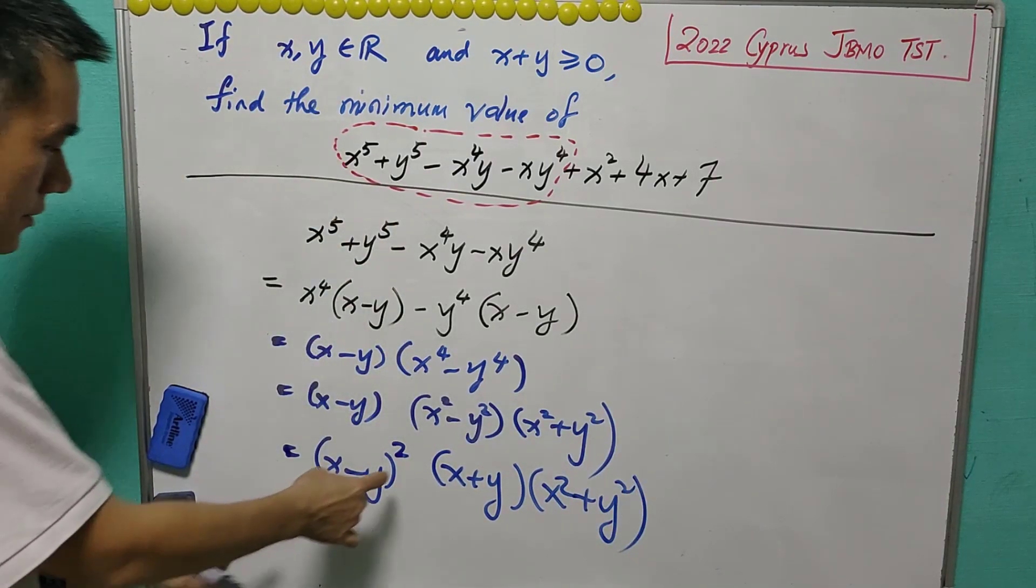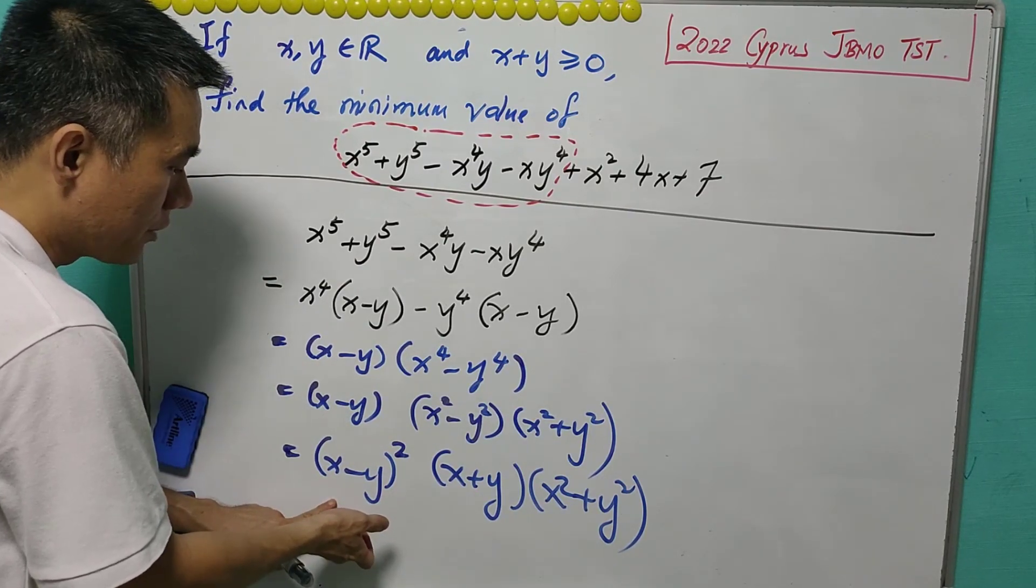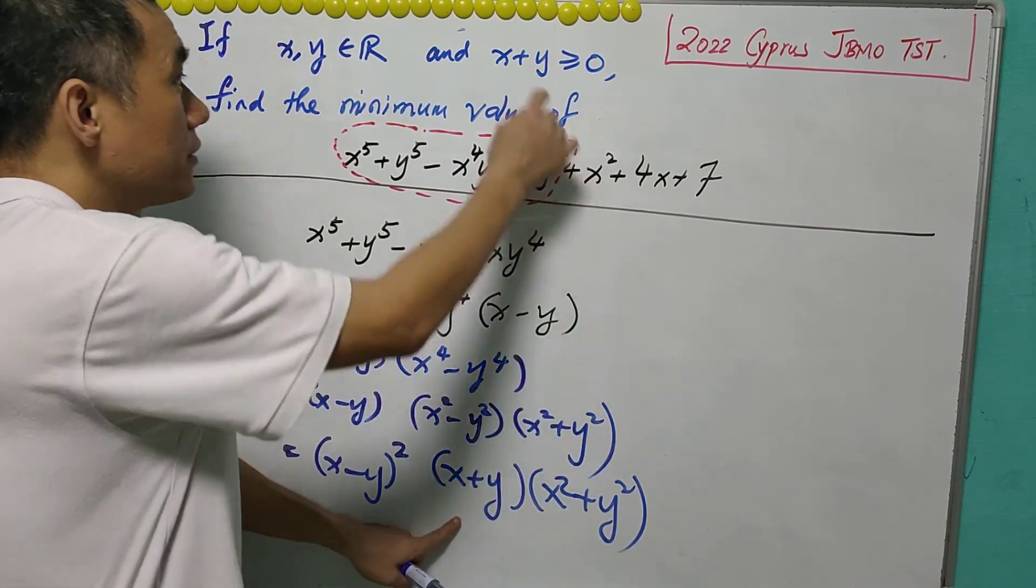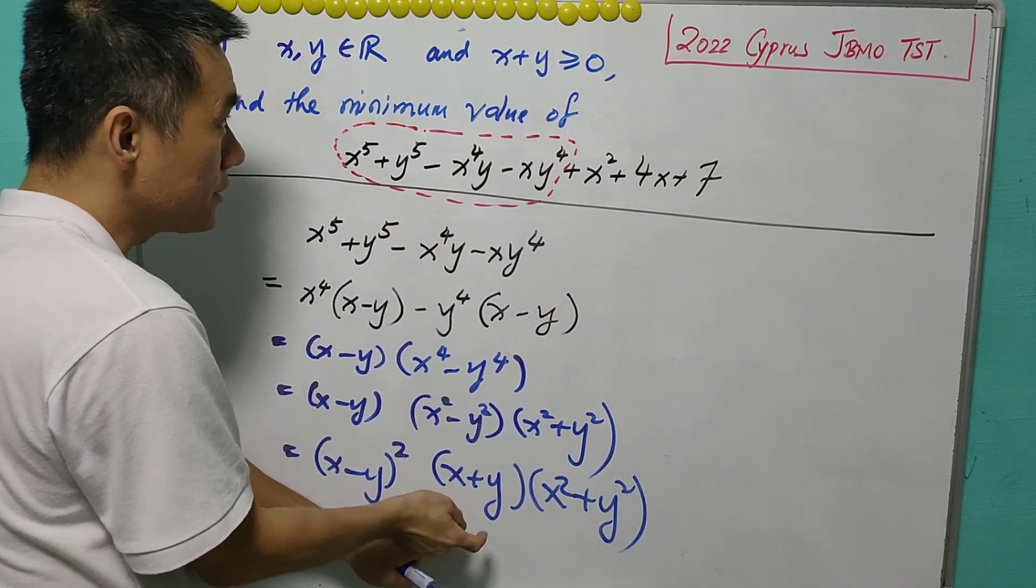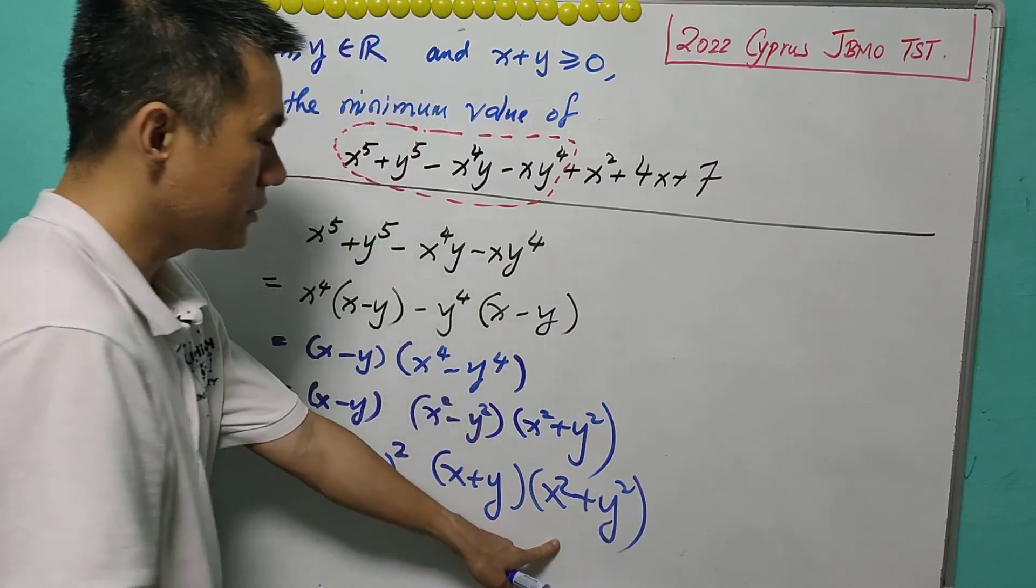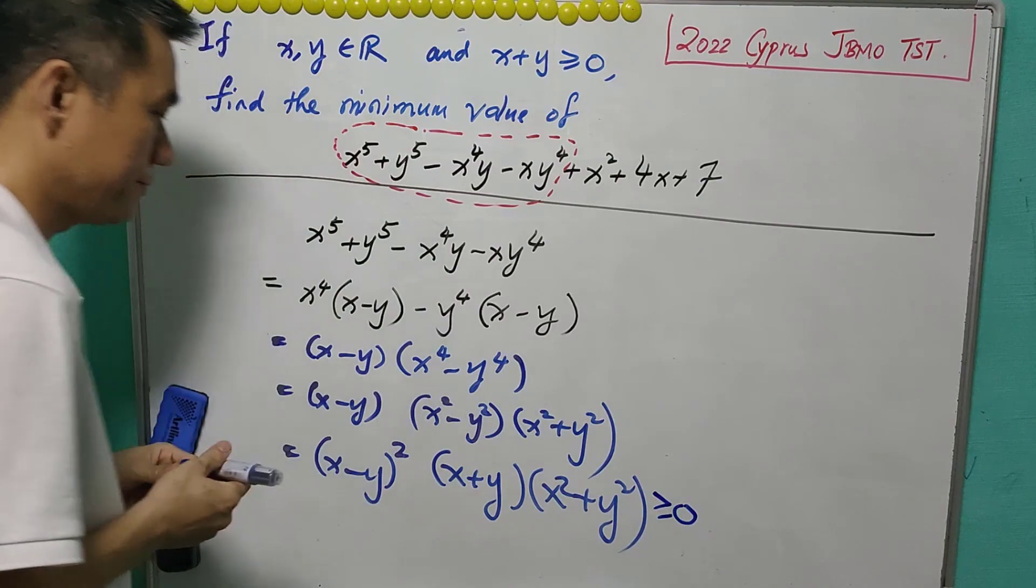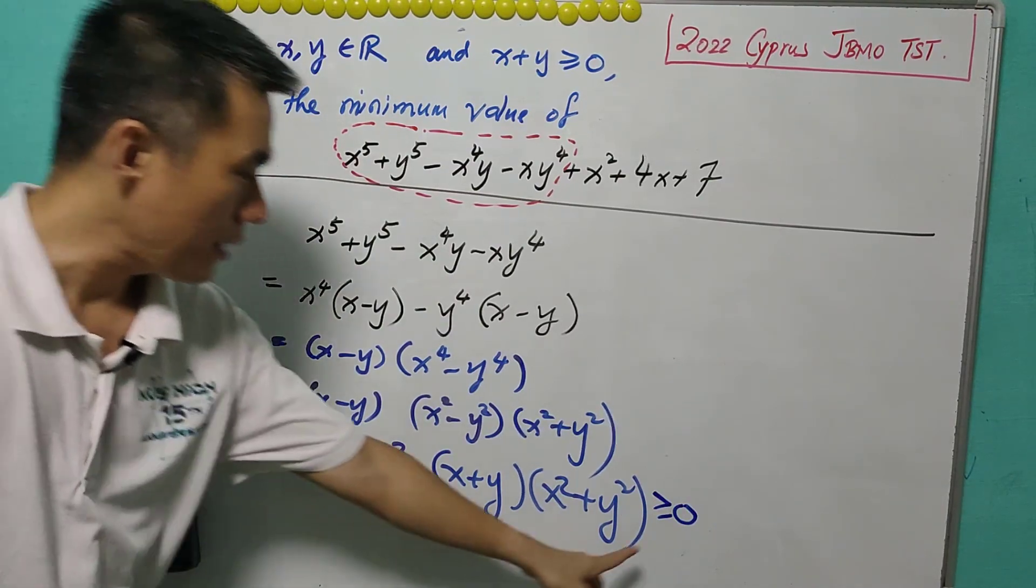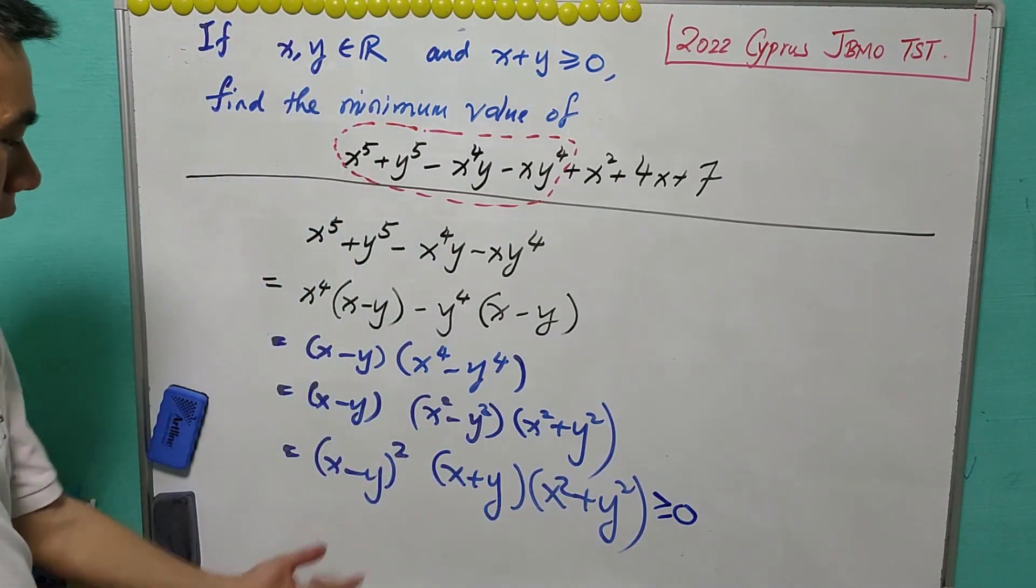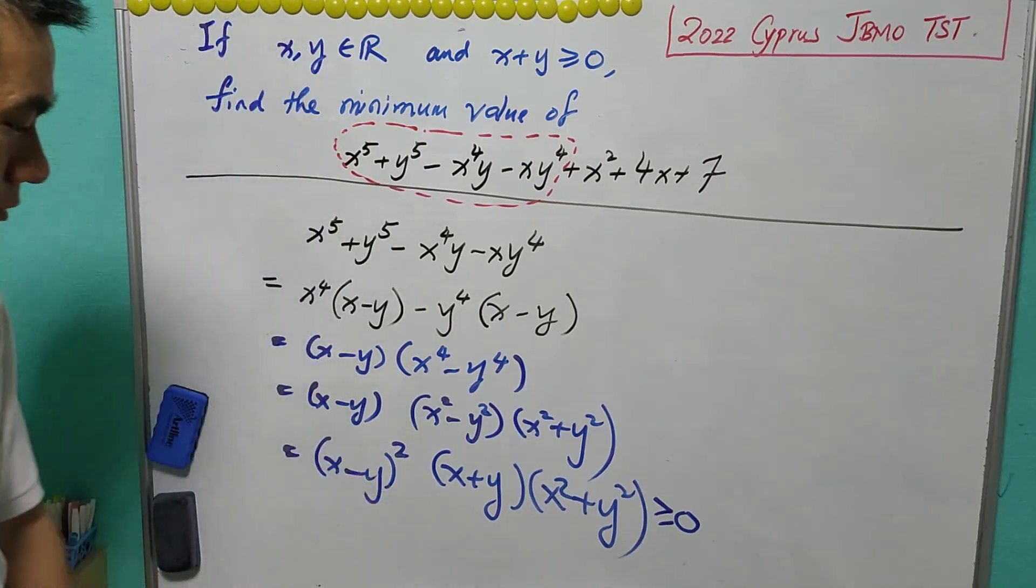Now it is clear that the square of real numbers is greater than or equals to zero. And from the condition, x plus y is always greater than or equals to zero. Sum of square also greater than or equals to zero. So overall, this is greater than or equals to zero. And note that it can be equal to zero if either x equals to y or x equals to negative y or both equals to zero.